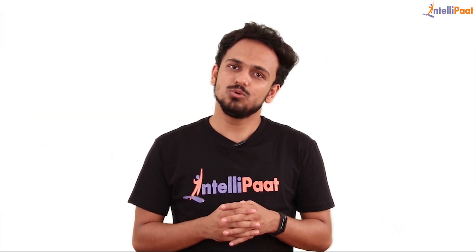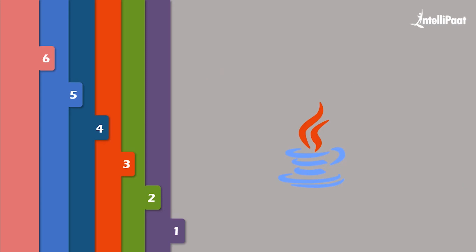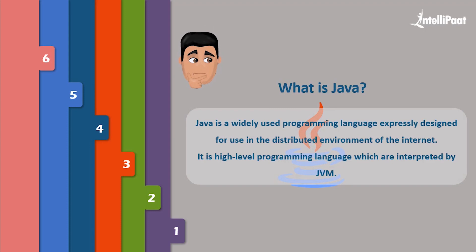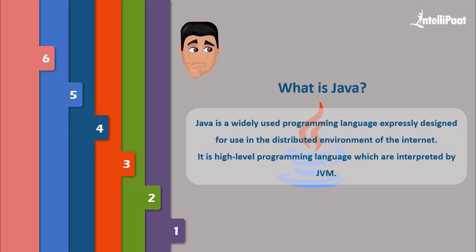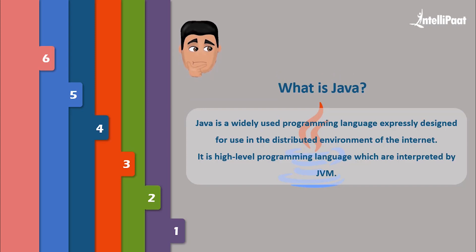Without any further ado, let's get started. Let us first understand what exactly is Java. We all know that Java is one of the widely used programming languages, expressly designed for use in the distributed environment of the internet. It is a high-level programming language which is interpreted by JVM. Java also supports multi-platform and can run on different platforms including Macintosh, Windows, and Unix computers.